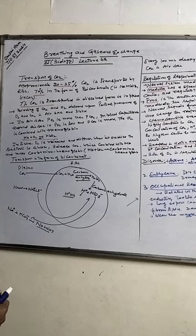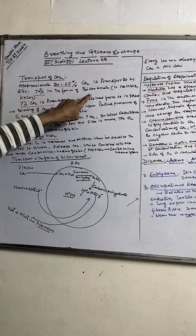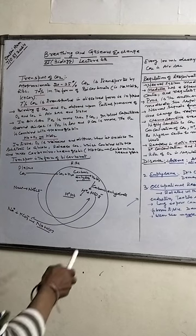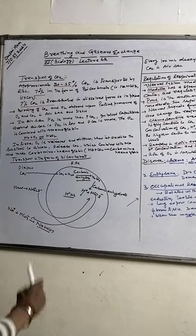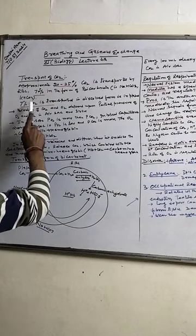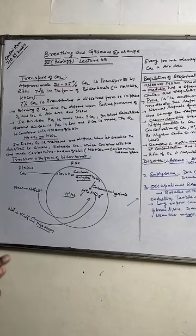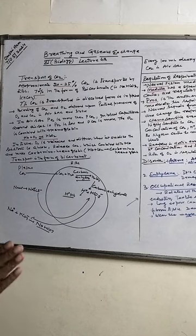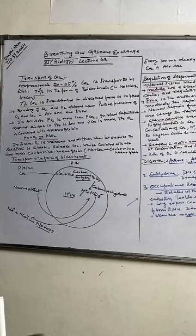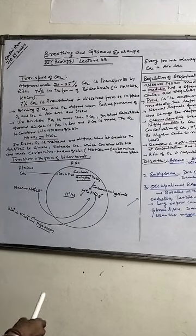Approximately 20 to 25 percent carbon dioxide is transported by RBC. 70 percent in the form of bicarbonate, that is sodium bicarbonate and potassium bicarbonate. And 7 percent CO2 is transported in dissolved form in plasma. So these are the three ways which help in the transportation of CO2 from the place of origin to the air sac.